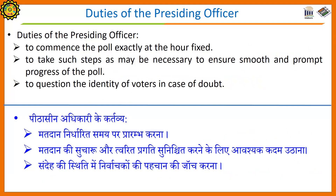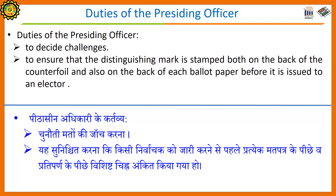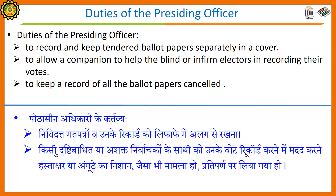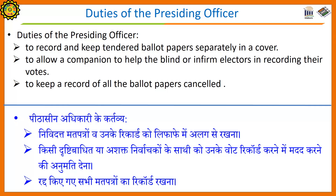To commence the poll exactly at the hour fixed. To take such steps as may be necessary to ensure smooth and prompt progress of the poll. To question the identity of voters in case of doubt. To decide challenges. To ensure that the distinguishing mark is stamped both on the back of the counterfoil and also on the back of each ballot paper before it is issued to an elector. To ensure that the signature or thumb impression, as the case may be, of each elector has been taken on the counterfoil before the ballot paper is detached from the counterfoil.